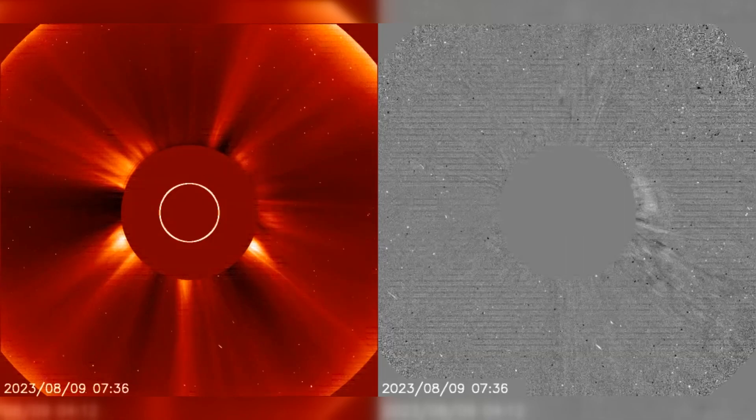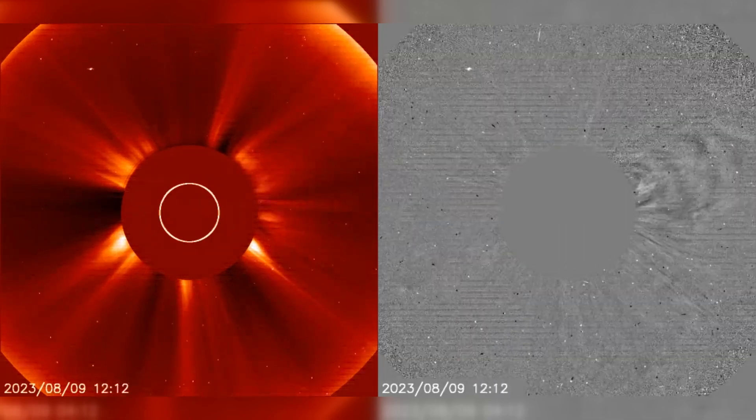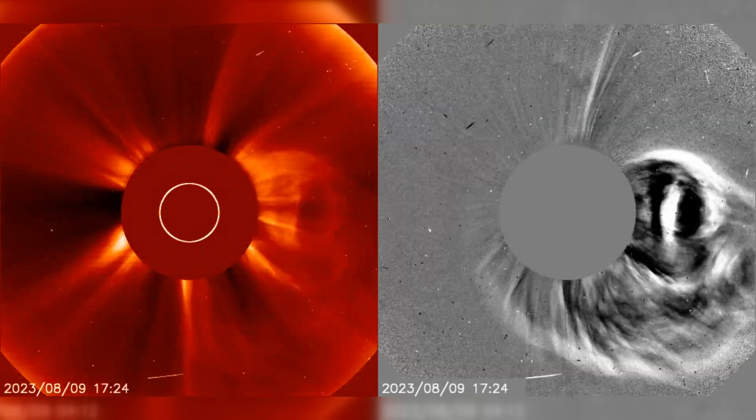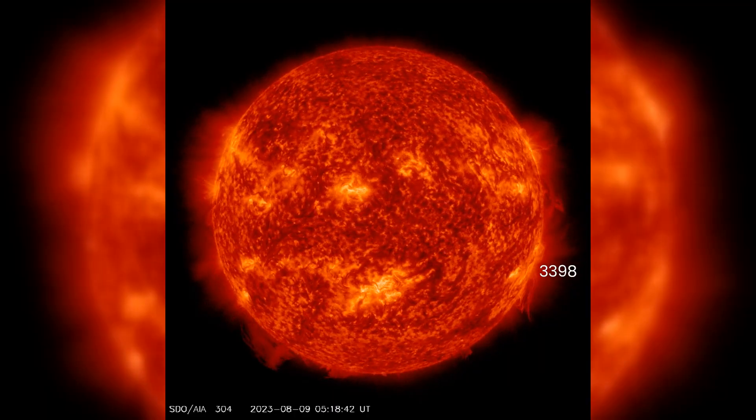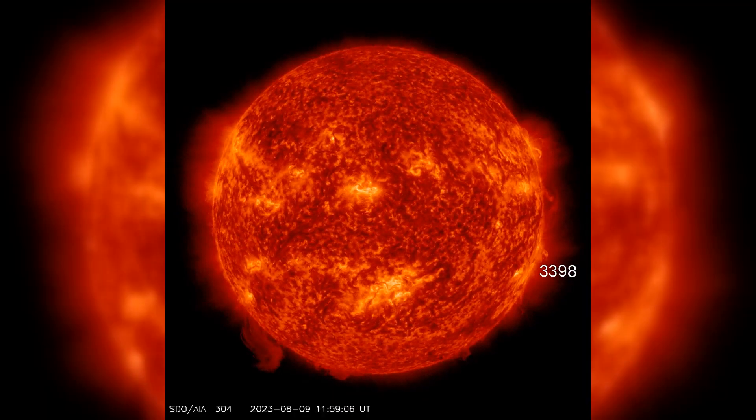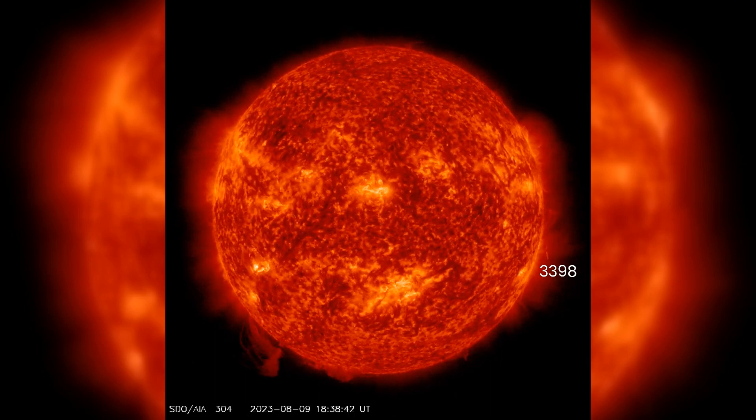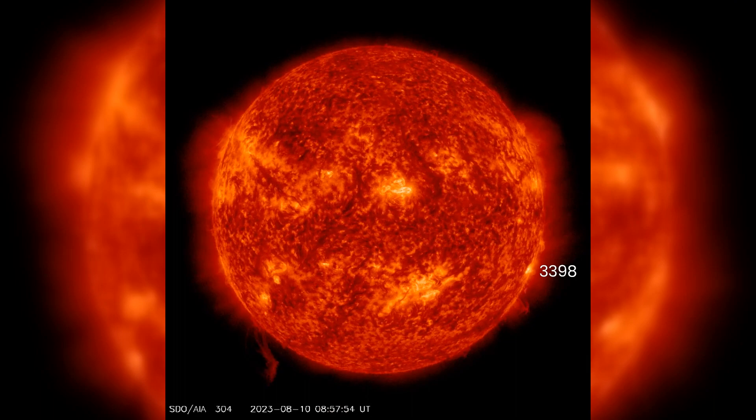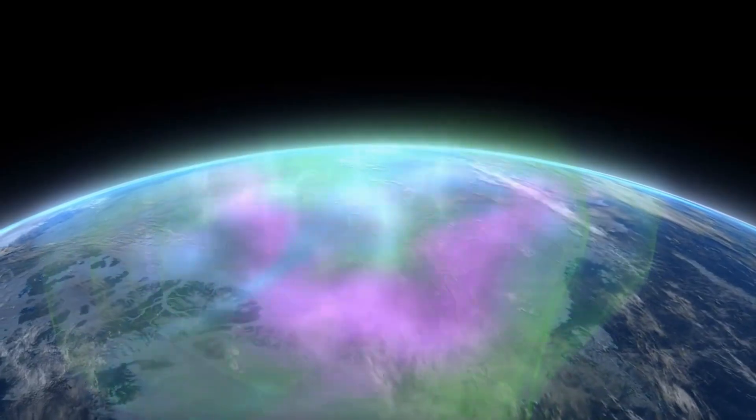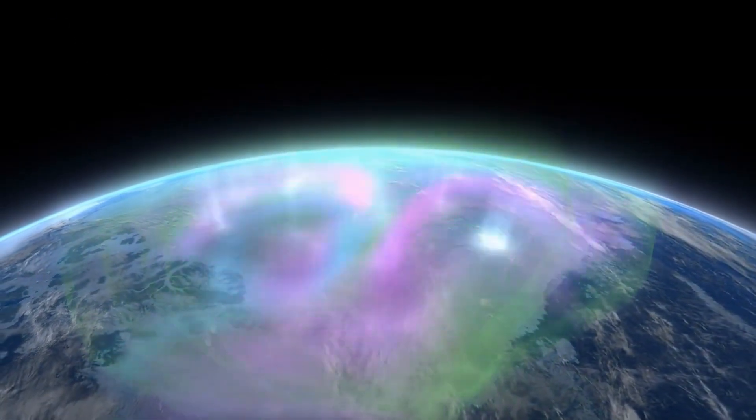The first, a halo CME, appeared in C2 imagery around 091600 UTC. The second, originating from the southwest limb around 100300 UTC, is associated with a C5 flare from Region 3398. No Earth-directed impact is expected.